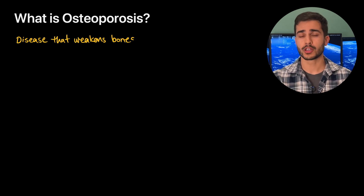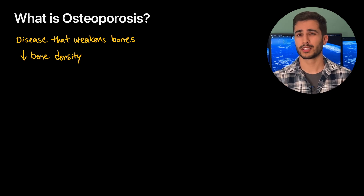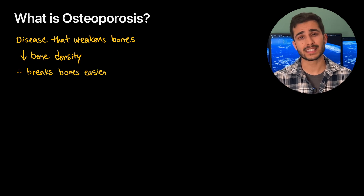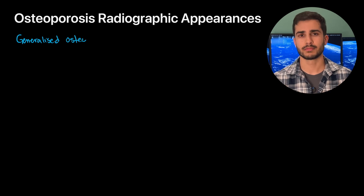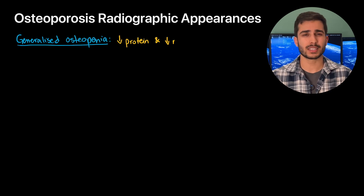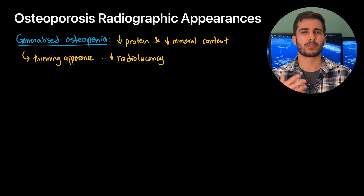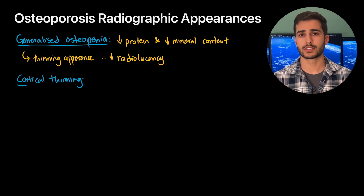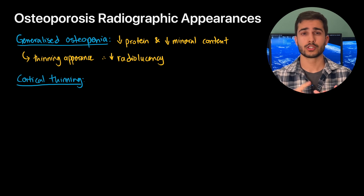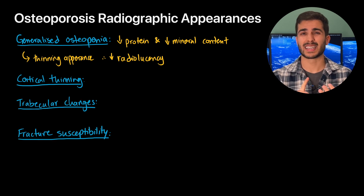Osteoporosis is by far the most common condition. It's a disease that weakens your bones by reducing bone density, which can cause a whole host of problems — the most obvious being that it makes breaking your bones a lot easier. The main radiographic feature is generalized osteopenia, where the protein and mineral content of bone tissue is reduced, manifesting as a thinning appearance or reduced radiodensity. Other key radiographic signs include cortical thinning, trabecular changes, fracture susceptibility, and decreased bone mass.